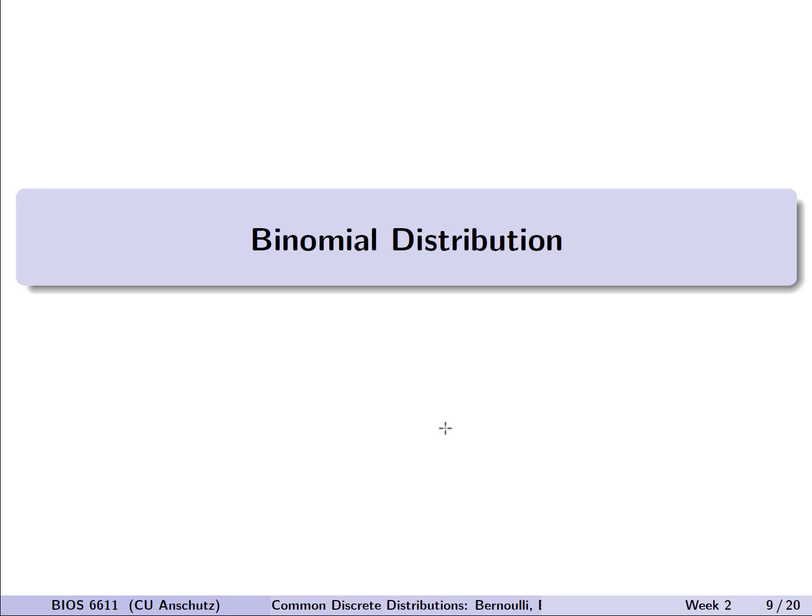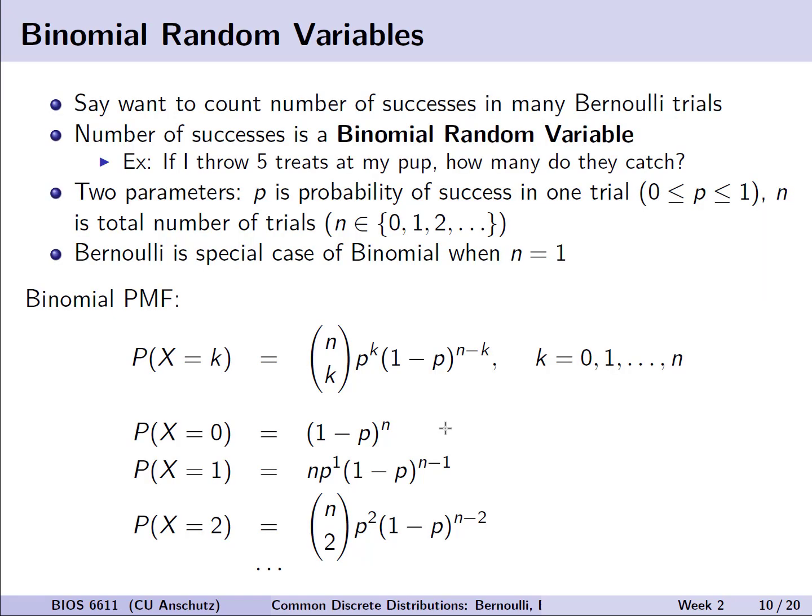The interesting thing about the Bernoulli distribution is that it only relies on a single trial or a single coin flip. Many times we're interested in actually looking at multiple trials or experiments, and this is where the binomial distribution can become very handy. Continuing our examples from before, suppose we want to count the number of successes within many repeated Bernoulli trials. The number of successes then will become a binomial random variable.